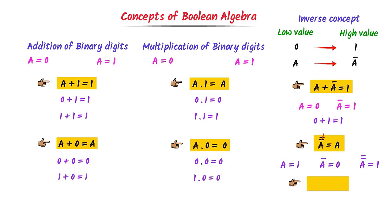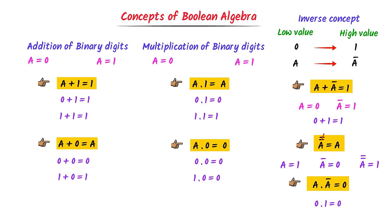Fifth rule: a dot a-bar equals 0. Let a equal 1, so a-bar becomes 0. Then 1 times 0 is equal to 0. Thus, a times a-bar equals 0. Note down all these basic concepts of Boolean algebra.